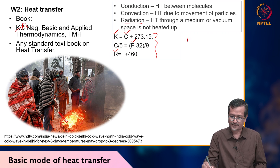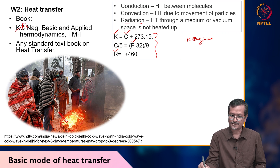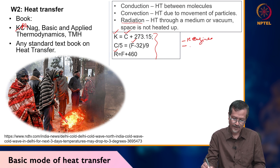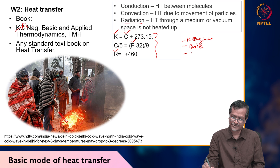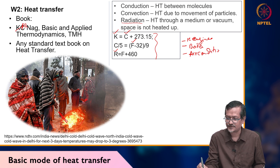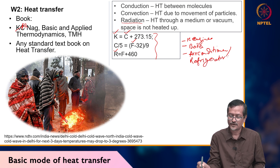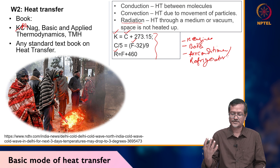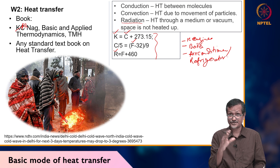Heat transfer examples include the IC engine and boiler system, where heat transfer calculations have to be done. In an air conditioner or refrigerator, there also a heat transfer system and heat exchanger will be there that we have to calculate. In an air conditioner system — heating, ventilation, and air conditioning — if you are facing cold weather, for example travelling to Alaska where temperature is very low, you have to heat the room to make it comfortable for the passengers.